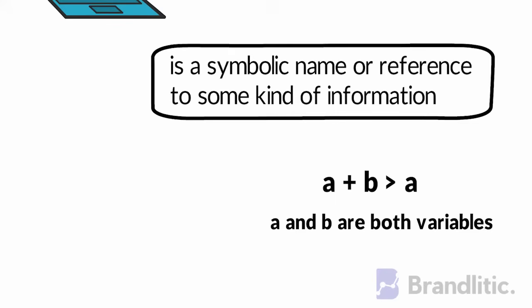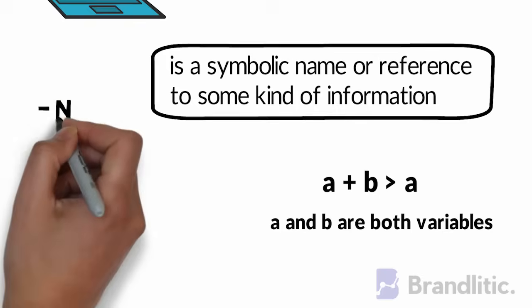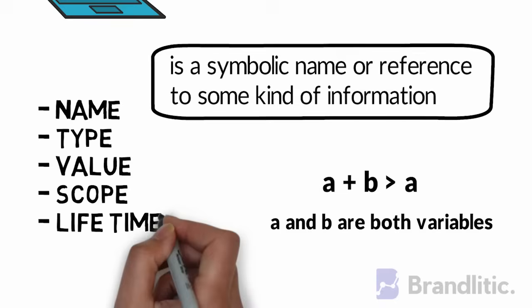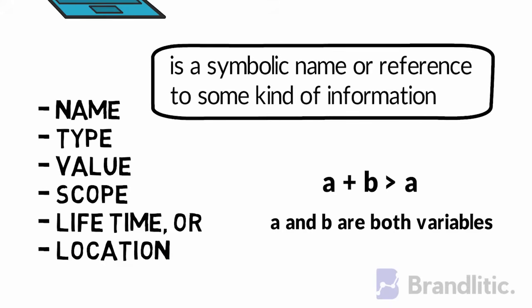In computer programming, variables allow code to operate for any value being represented by variables. But they can be more than just symbolic letters. Variables can have a number of different properties in computer's memory, such as name, type, scope, and location. And different programming languages call for variables differently. But they all use this component.